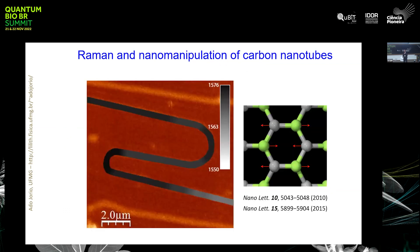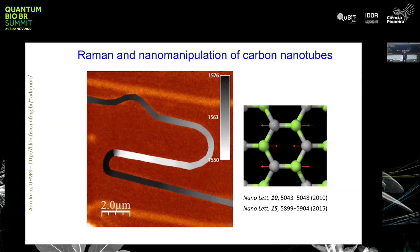Here we go from the moon and the earth down to very small objects. This is a single-wall carbon nanotube lying on a surface. The gray color you see is the frequency of the carbon-carbon stretching mode. If you come with an AFM tip and give a little kink to the nanotube and look at what happens to the frequency, you see that by giving a little movement to the tube you are actually stretching it, and the frequency changes.